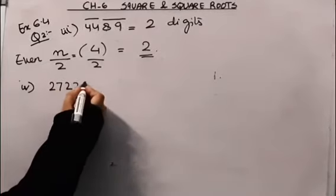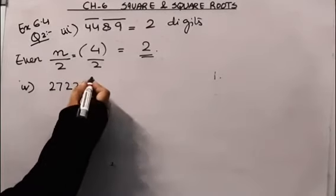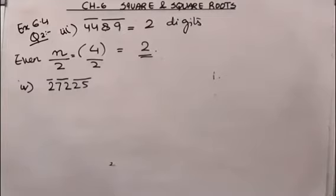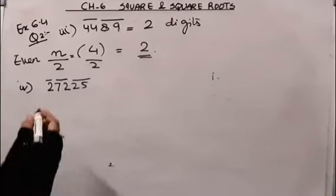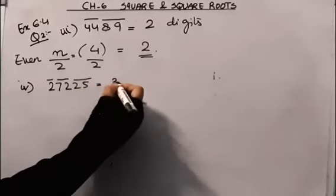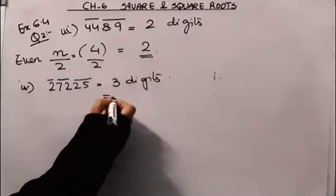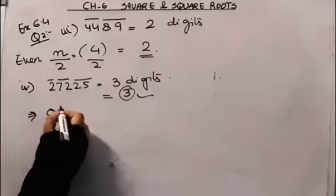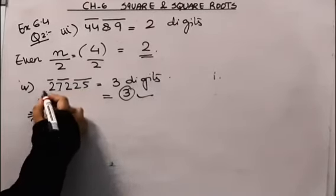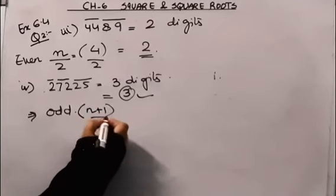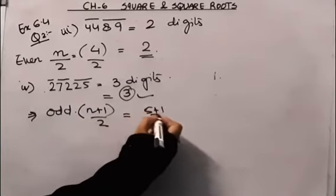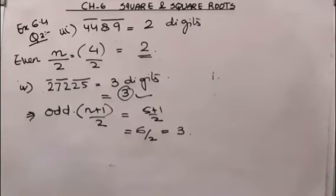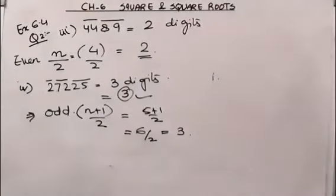The fourth example is 27225. Placing the bars, we get 3 bars, so the square root will have 3 digits. Using the formula method, 27225 has 5 digits which is odd, so we use (n+1)/2 = (5+1)/2 = 6/2 = 3 digits. Both methods give 3 digits.